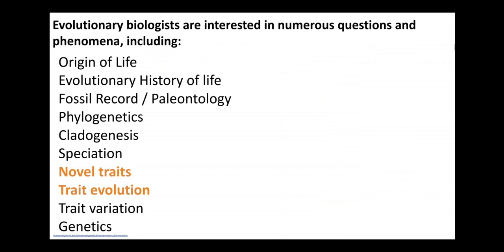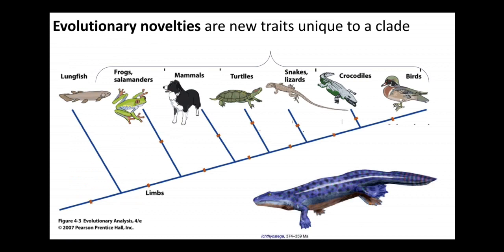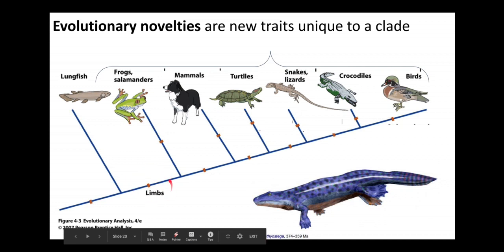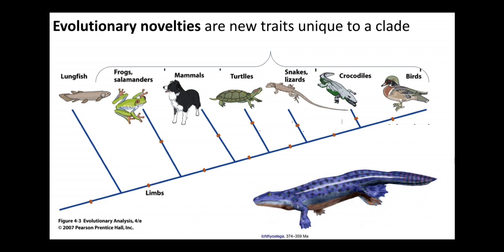Another key question that evolutionary biologists consider is where do new traits evolve from and how do those traits evolve? By novel traits, we mean something that is brand new — at least to a clade or a lineage, or possibly brand new to nature entirely, some trait that has never occurred before on planet Earth. For example, as tetrapods — four-limbed organisms — evolved over time, they developed a number of novel adaptations, the first being four limbs. Those four limbs are thought to have been key to allowing organisms to emerge onto land, to evolve from a purely aquatic lifestyle and begin to live partial and fully terrestrial lifestyles on land.